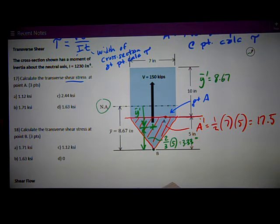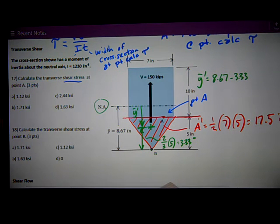So Y bar prime is 8.67 minus 3.33 inches, which is equal to 5.337 inches.